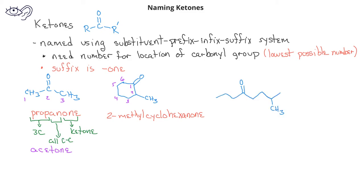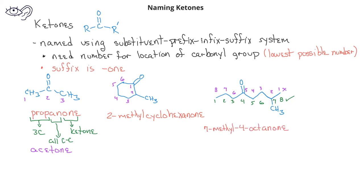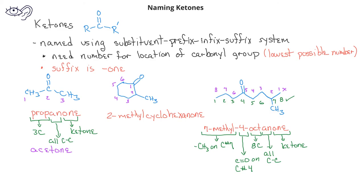In this third example, we have an eight-carbon chain, which means it is going to have the prefix oct. We can count from either side to see which direction will give us the lower number for the carbonyl group, and we find that counting from left to right gives us the carbonyl group on the fourth carbon. We also have a methyl substituent that would now be on the seventh carbon. We would name this ketone 7-methyl-4-octanone.